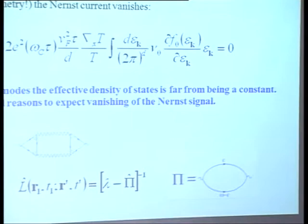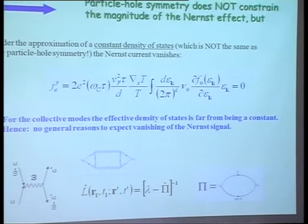For a collective mode, there is no such thing as a constant density of states. That's why there is no general reason to expect that the Nernst signal will vanish. However, when you do the calculation, what can come out is that this zero is transformed into some frequency integral — you have to calculate fluctuations, there are some frequency integrals, and this frequency integral in a similar way is odd. So it is trying to make this effect zero.